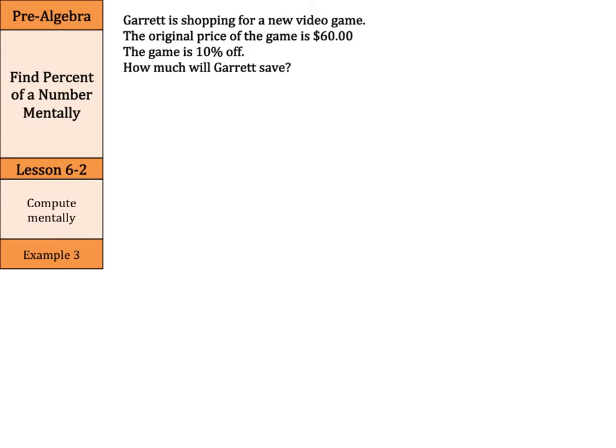Garret is shopping for a new video game. The original price of the game is $60. The game is 10% off. How much will Garret save? Now, you don't actually need to write the problem out here. You can just compute this in your head. If you use decimals again, I'll show you how to think through this, but 10% can be 0.1 times the 60. And remember, 10% we're going to move the decimal back to the left once. So this just becomes $6.